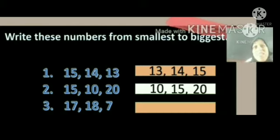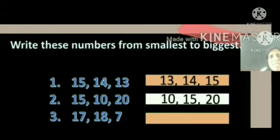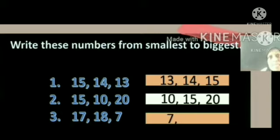The third question is: 17, 18, 7. We should arrange the numbers from smallest to biggest. There are two-digit numbers and one one-digit number together. You know that a one-digit number is smallest. Here 7 is the smallest number, so write 7 first. After that, among 17 and 18, the smaller number is 17.